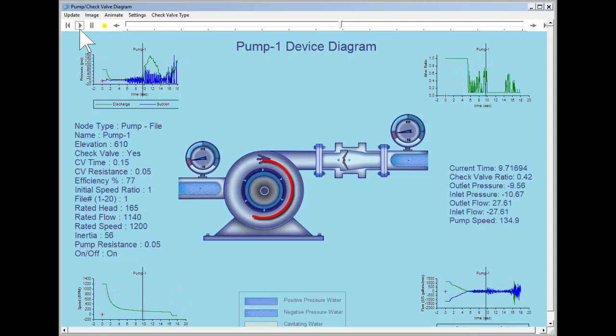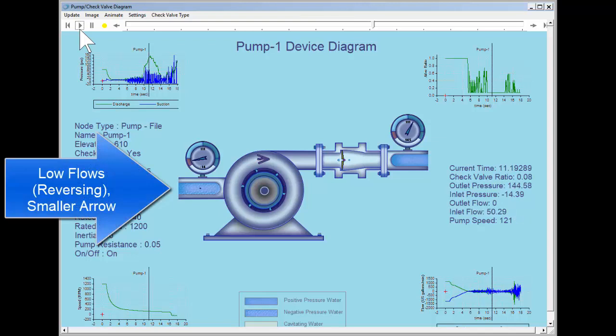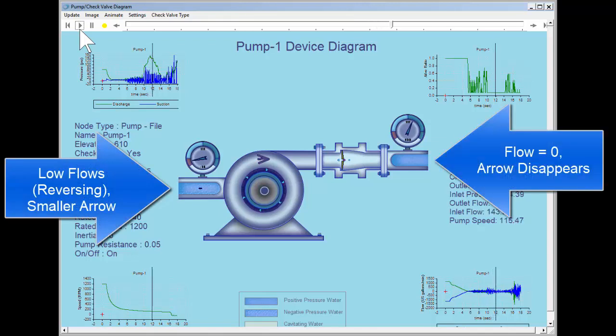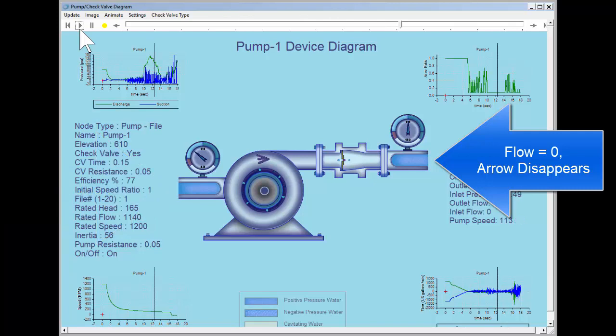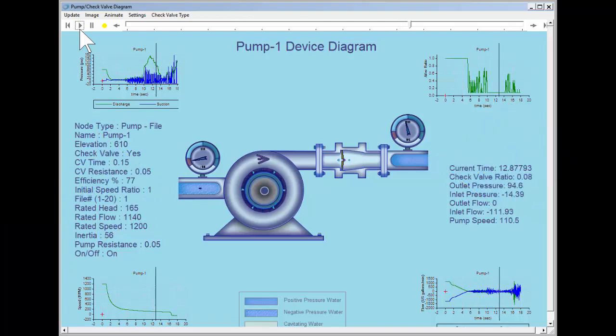Notice the rotors of the pump spin more quickly or more slowly, depending on pump speed. The inlet and outlet flow arrows also change size and direction. The depiction of the water in the inlet and outlet pipes changes to show positive pressure, negative pressure, or cavitation pressure.